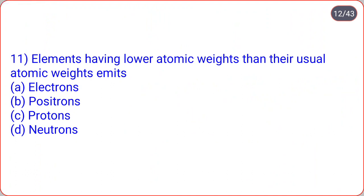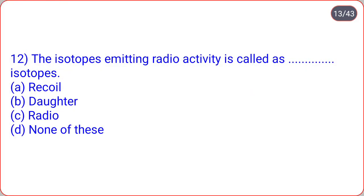The next: elements having lower atomic weights than their usual atomic weights emit dot-dot. Options are electrons, positrons, protons, neutrons. Correct option is option B, that is positrons. Then next: the isotopes emitting radioactivity are called as dot-dot isotopes. Options are recoil, daughter, radio, none of these. Correct option is C, that is radioisotopes.